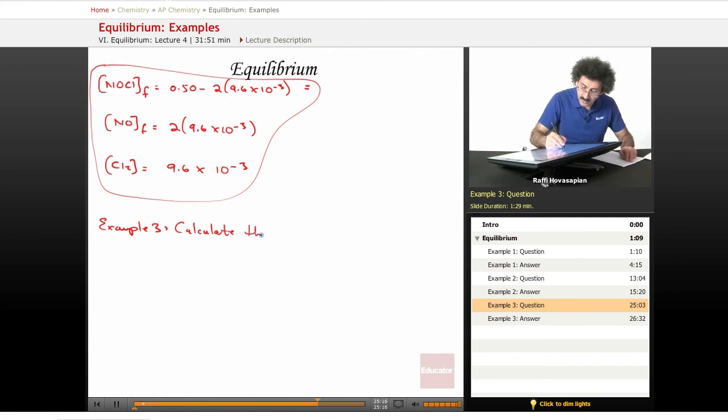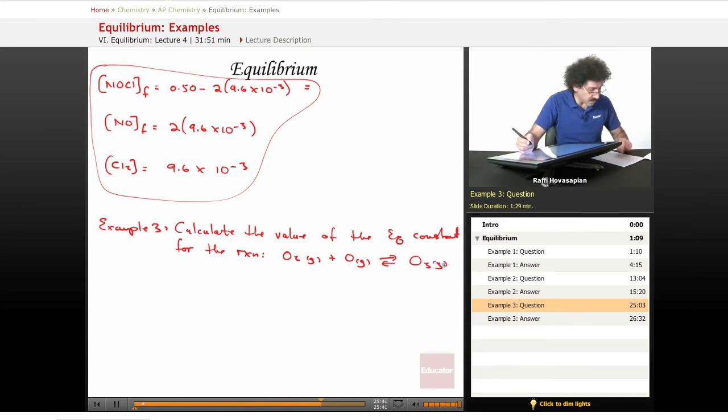Calculate the value of the equilibrium constant for the reaction O2 gas plus oxygen gas goes to ozone gas. Given reaction one, this is gonna be sort of a Hess's law kind of problem: NO2 in equilibrium with NO plus O.